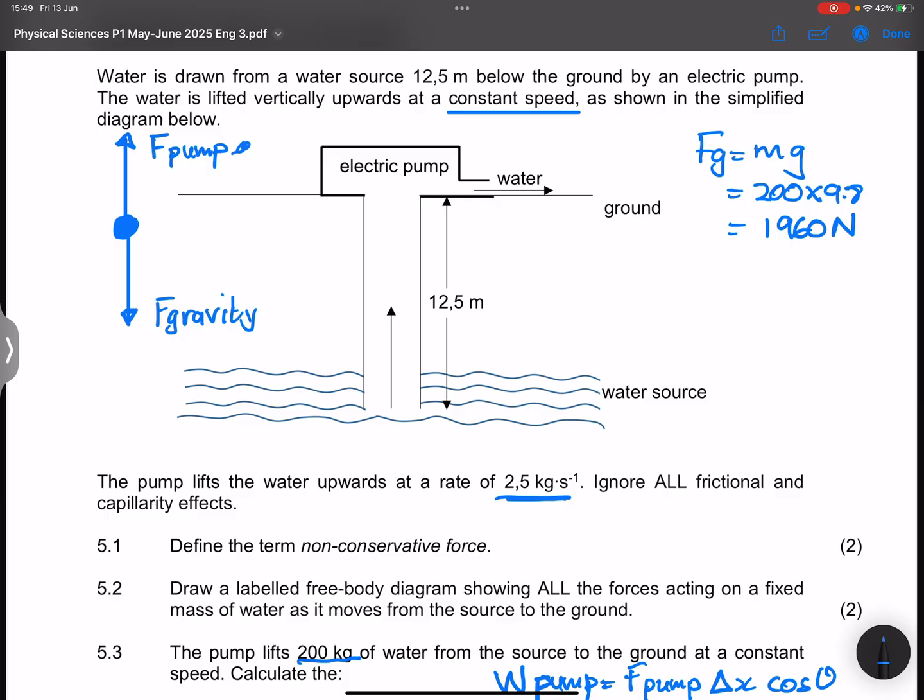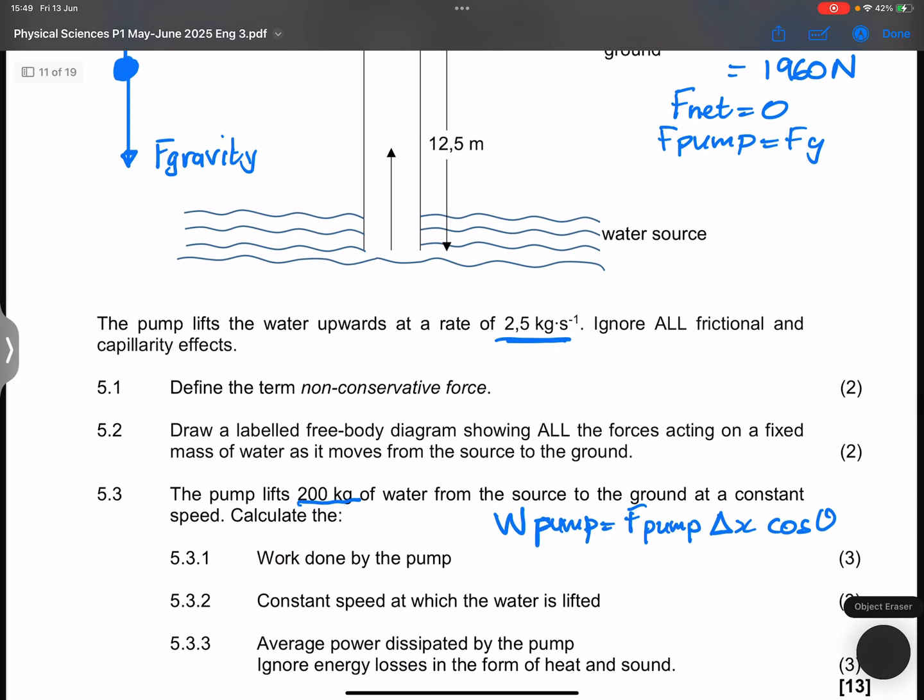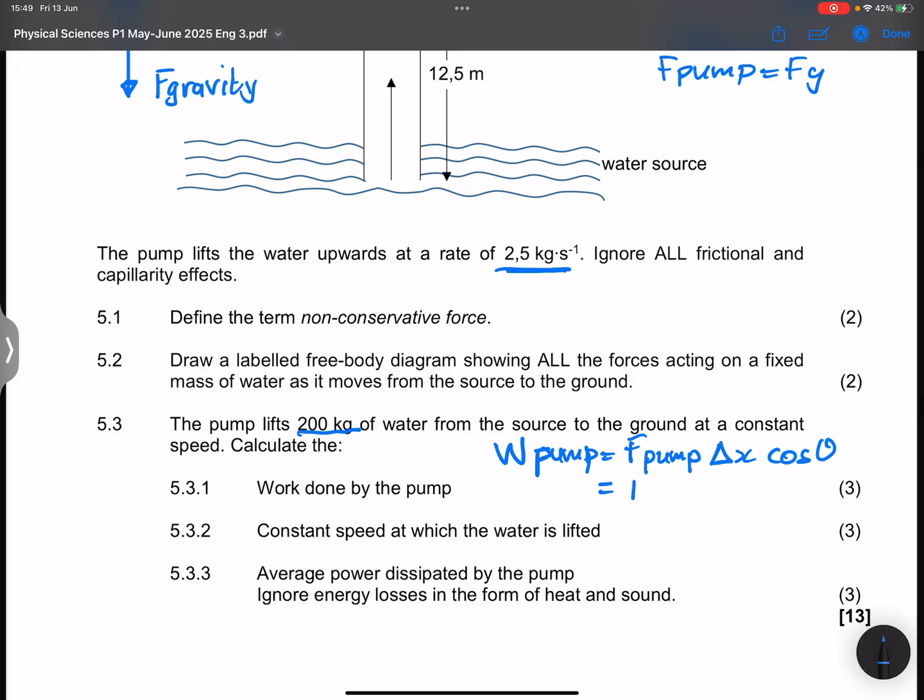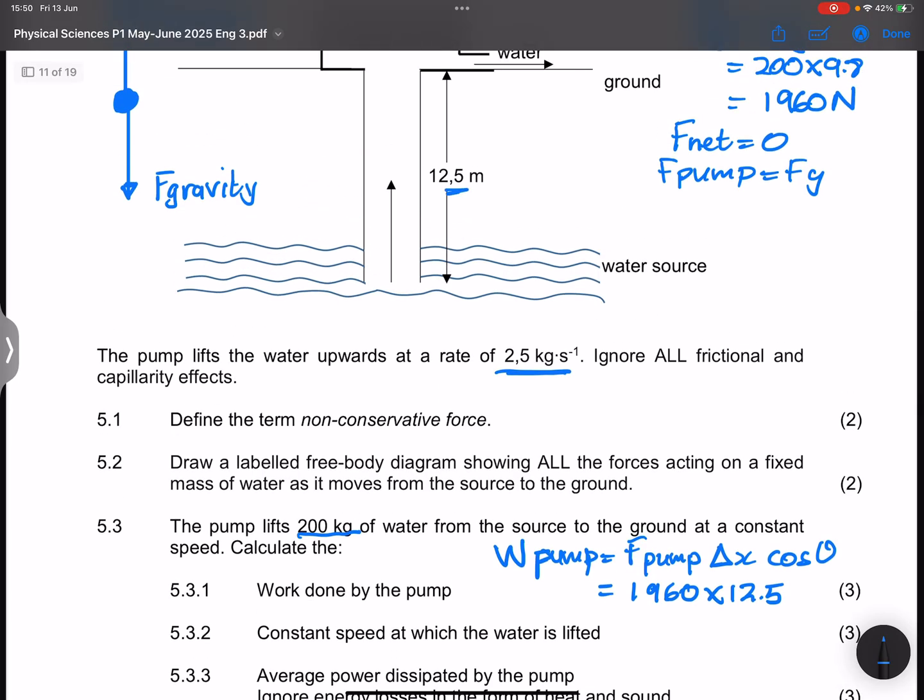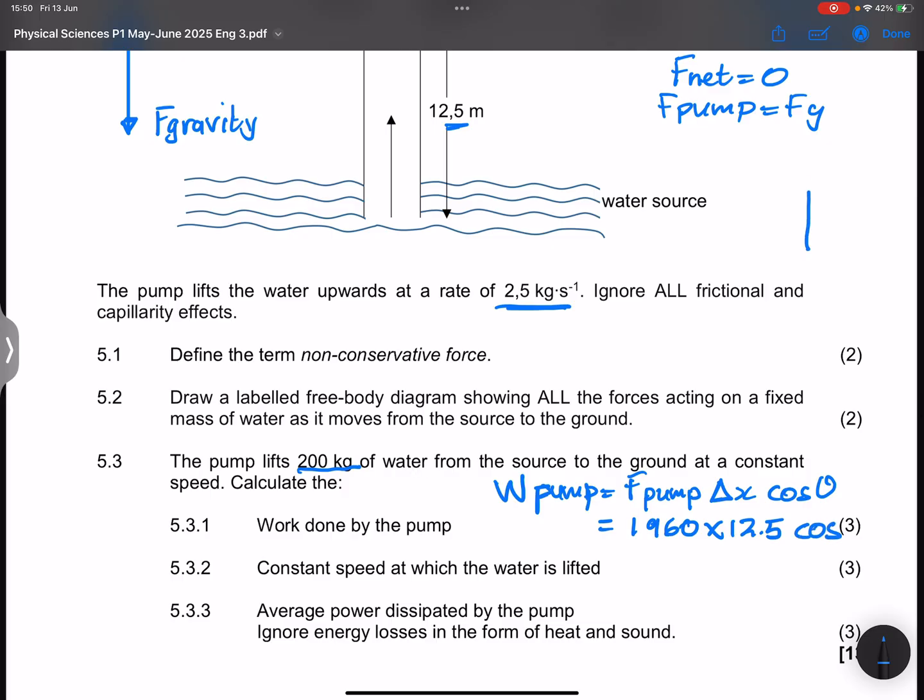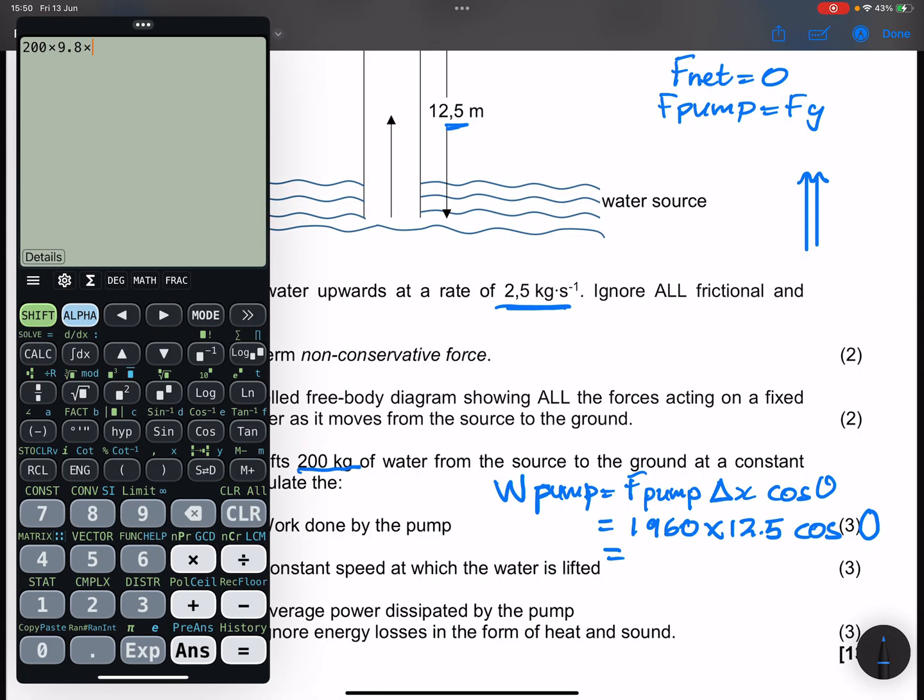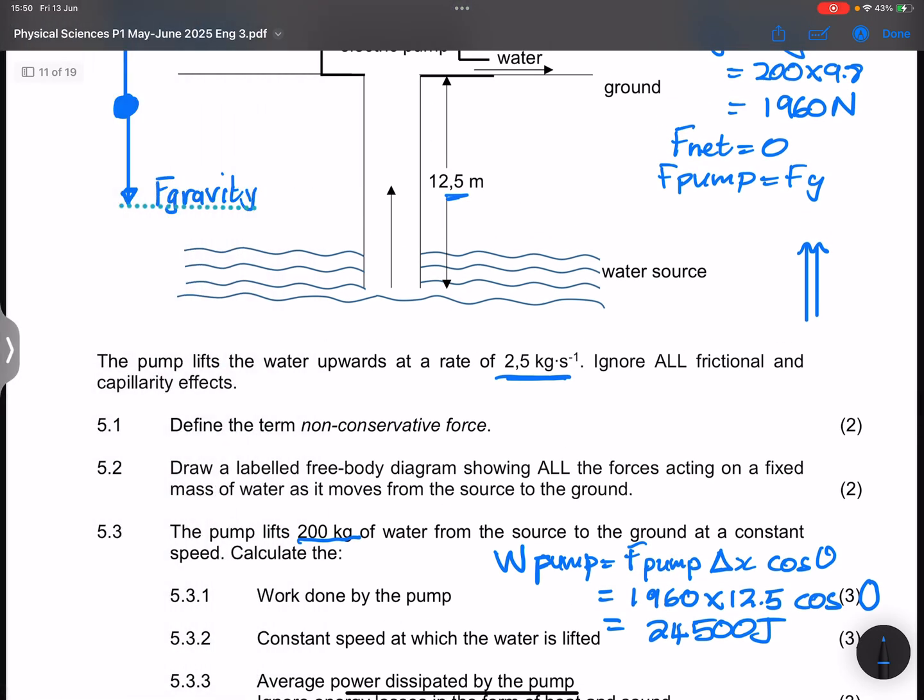But what does it mean? It means the net force, or rather the force of the pump, F net is equal to 0. So that means the force of the pump must be equal to the gravitational force. And so I'm going to substitute it there. That means that's 1960. The displacement is 12.5. Now the angle between, remember, we always say theta would be the angle between direction of motion and the force in question. So the direction of motion is upwards and the force in question is also upwards. So that makes an angle of 0. That would be multiplied by 12.5. And that gives me a work done of 24,500 joules. That's the amount of work done by the pump.